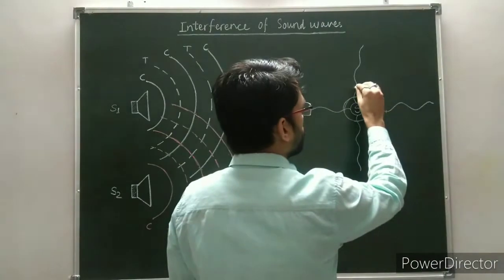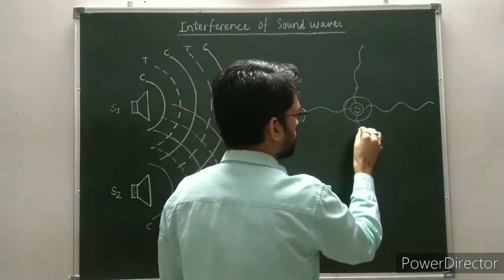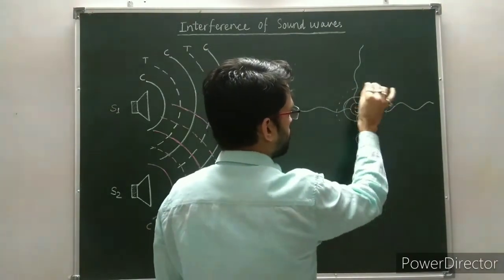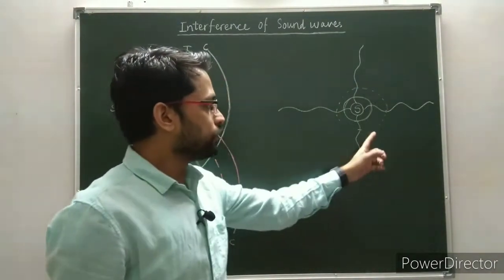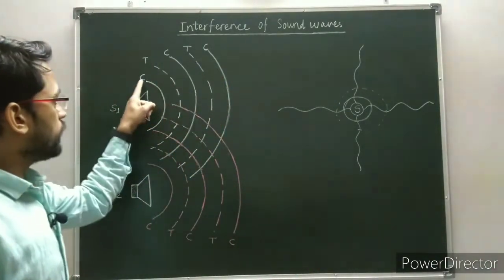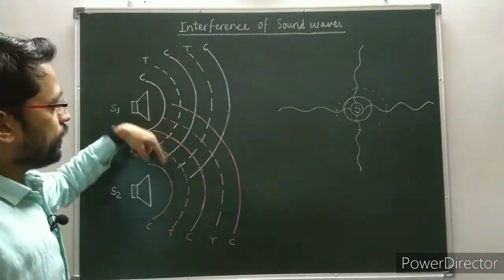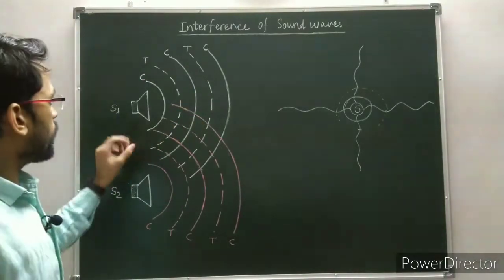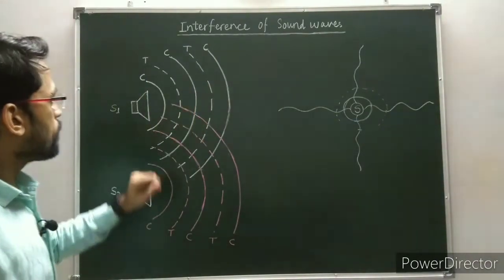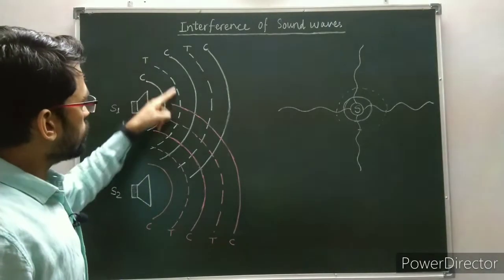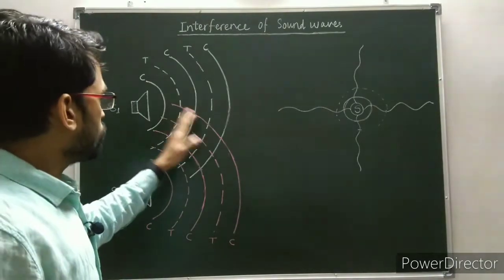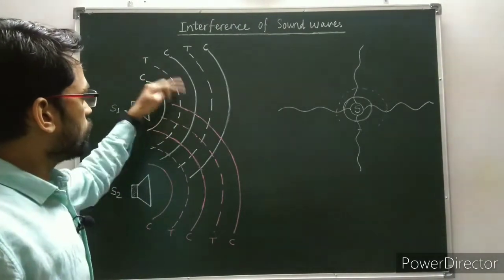Similarly, when you connect all the troughs, you will get the wavefront of the trough. In the diagram, I am showing the wavefronts. Here this is the source of sound producing sound in the form of compressions and rarefactions, as shown by the wavefronts.